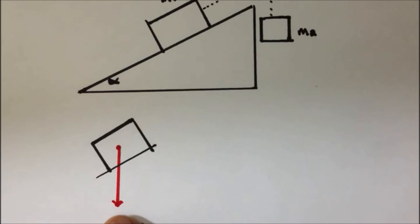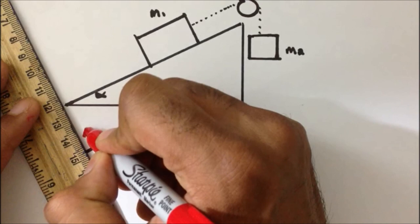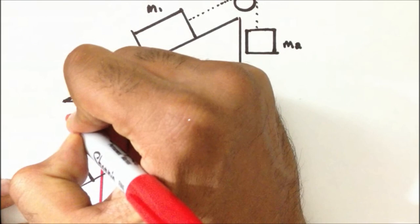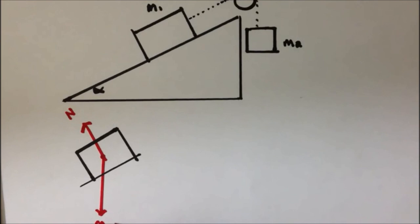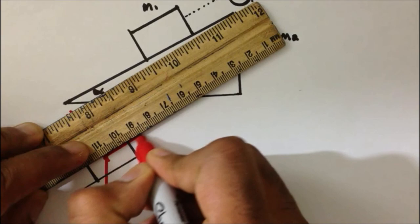Perpendicular to the inclined plane, we have the normal force, drawn perpendicular to the inclined plane. This is the normal force, and this is M1g. Over here, we have this tension T acting up and parallel to the inclined plane, so I will draw this force going that way — tension T.